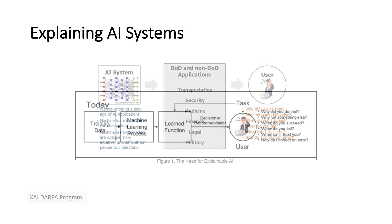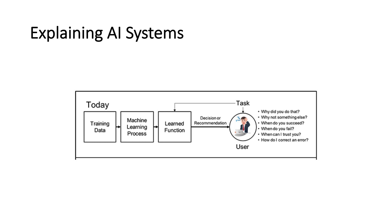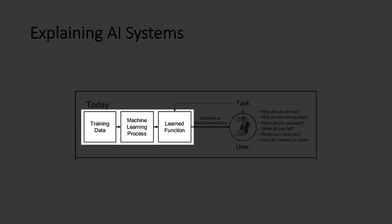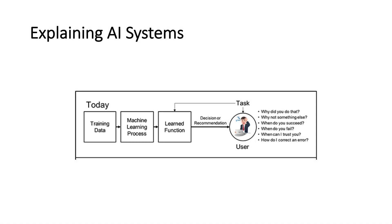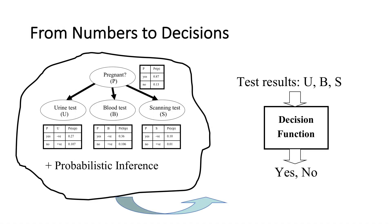The next slide shows the current practice and how it works. When building mainstream systems today — which are machine learning systems — you have some training data, you do some learning, and you learn a function. This learned function is an important term throughout the talk: the box that we eventually learn and use in practice just maps some inputs to outputs, and what we want to try to do is explain that particular function.